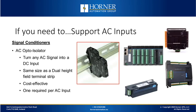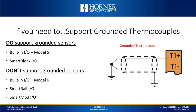If you need to support AC inputs, we have a Signal Conditioner, which is an opto-isolator that is AC on the input side and DC on the output side. It can turn any AC signal into a DC input and is very cost-effective — only one is required per AC input. For grounded thermocouples, the products that support grounded sensors include the built-in IO Model 5, which supports up to two channels of thermocouple on any XL product and they can be grounded or ungrounded. SmartBlock offers grounded thermocouple support as well, with 8-channel or 4-channel options. Products which don't support grounded thermocouples but do support ungrounded thermocouples include the built-in IO Model 6, the SmartRail IO thermocouple module, and the SmartMod IO thermocouple module.